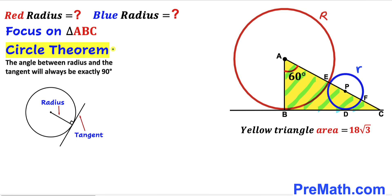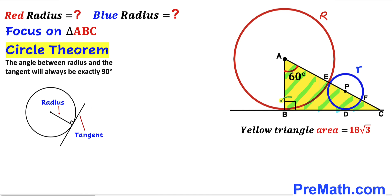Let's recall the circle theorem. According to this theorem, the angle between the radius and the tangent line will always be 90 degrees. Here we can see the radius and the tangent line, so this angle ABC has to be a 90-degree angle, since this is our radius and this is our tangent line.